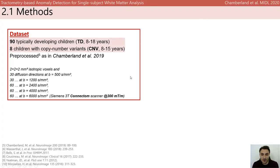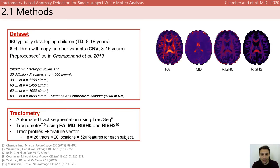Diffusion MRI data were acquired from 90 typically developing children and 8 children with a CNV at high genetic risk of neurodevelopmental disorder using a 3D connectome MRI scanner. Automated white matter track segmentation was performed using TractSeg. Tractometry was done by profiling DTI-based metrics such as FA, MD, as well as RISH features along the bundles. The resulting track profiles were concatenated to form a feature vector.